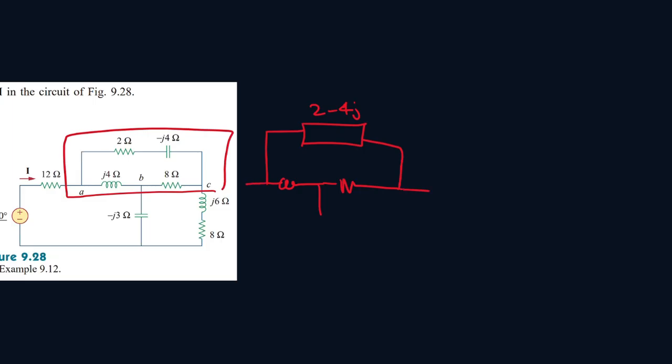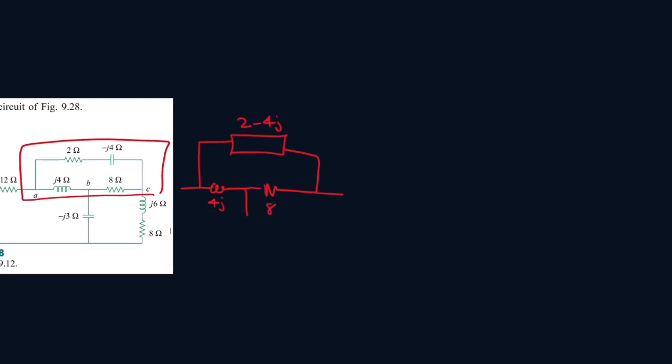Now I'm going to try and make this look like a triangle. So 2 minus 4j. This is 4j and this is 8 ohms. Obviously this part we're going to connect it here, this part we're going to connect it here, and then this part we're going to connect it here.